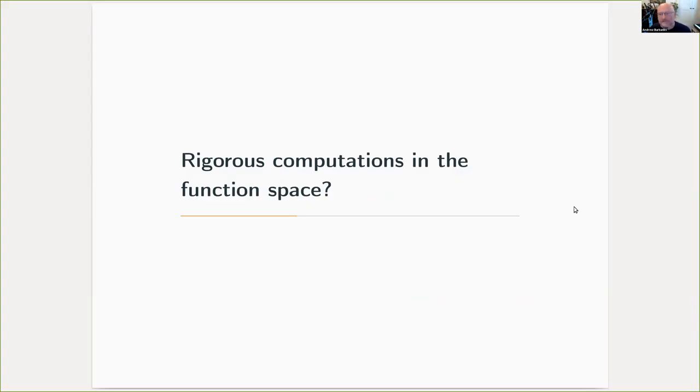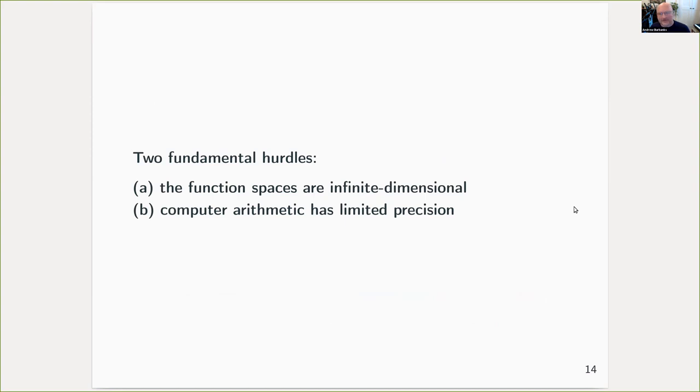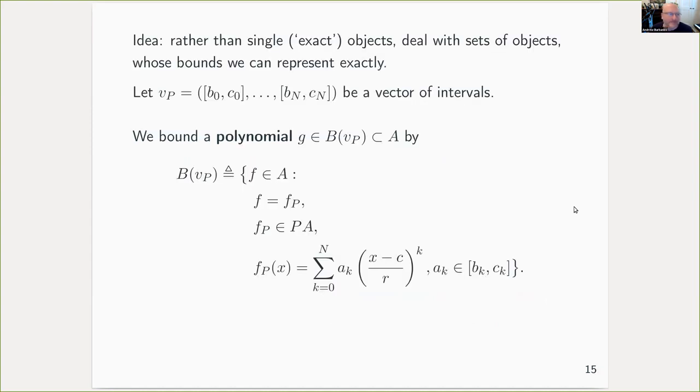To do that, we want to do rigorous computation somehow in our function space. And we immediately hit two apparently insurmountable hurdles, which are that the function space is infinite dimensional, and secondly, that our computer arithmetic has limited precision. In fact, we can view these two problems as the same kind of problem and use a unifying idea to solve them. The idea is this: that we abandon hope of dealing with single exact objects and instead we settle for dealing with sets of objects whose bounds we can represent exactly in our computer.